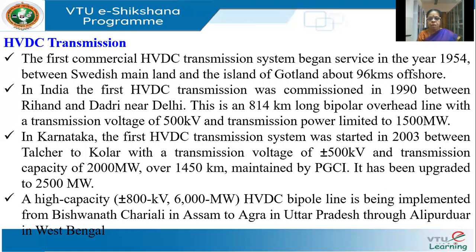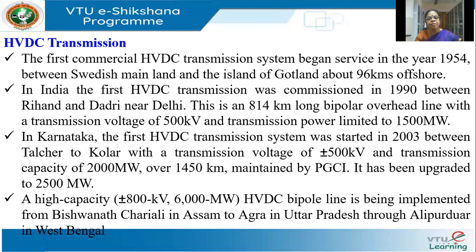Coming to HVDC: today our DC generation sources include only solar PV, which generates DC voltage. All other conventional plants — hydel, thermal, nuclear, gas, diesel — and wind farms produce AC. So in HVDC, at the sending end I take the AC and convert it to DC by rectifying it, then transmit DC. At the receiving end I have DC, I invert it back to AC, and then give it to the loads. This is called HVDC transmission — I convert AC to DC, transmit DC, then DC back to AC for the load.